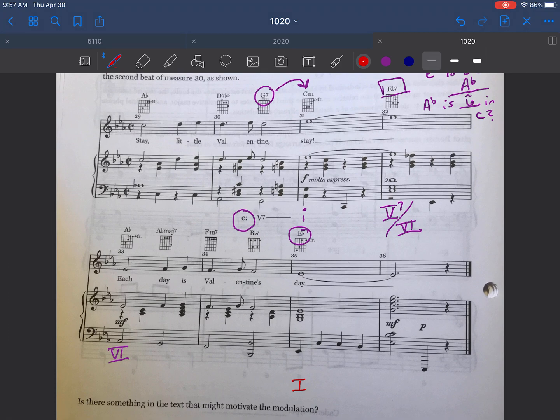The chord before the E flat major chord is a 5 7 of E flat. It's B flat 7. So I know that's 5 7 of E flat. The chord before that is the F minor 7. F minor 7 is 2 7 in E flat major.